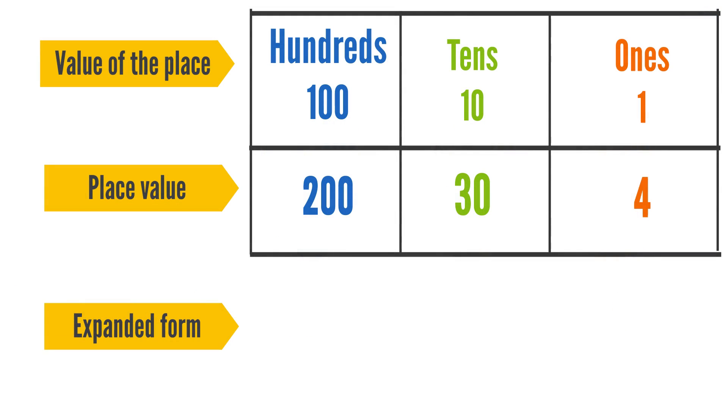If we add up the place values of the digits, we will get the expanded form of the number 234.